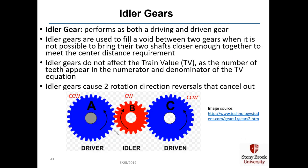Idler gears perform as both a driving and a driven gear, used to fill a void between two gears when it's not possible to bring their shafts close enough to meet the center distance requirement. They don't affect the train value because the number of teeth appear in both numerator and denominator of the train value equation. In this example, driver A is going counterclockwise, it drives idler gear B clockwise, and idler gear B drives gear C counterclockwise — with no change in speed between the shaft of gear A and gear C.